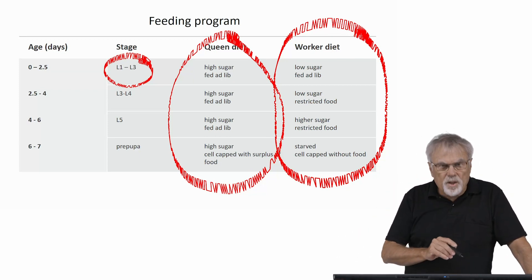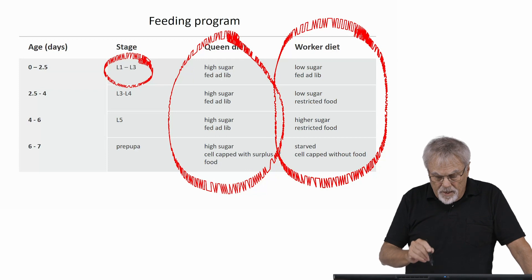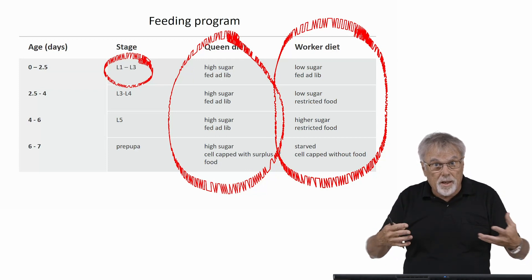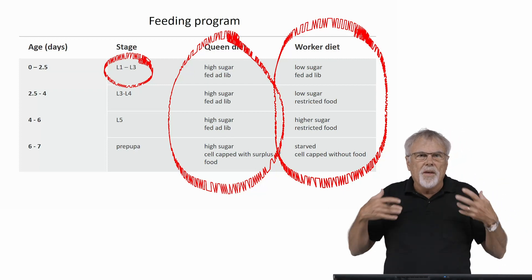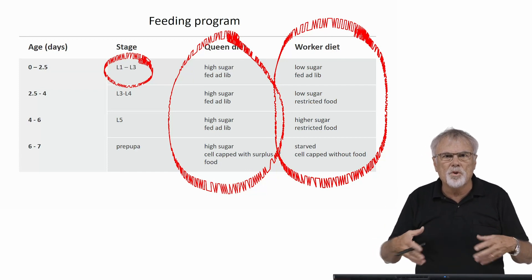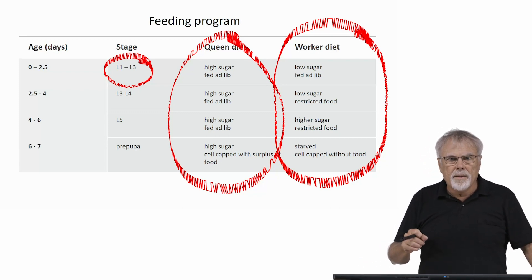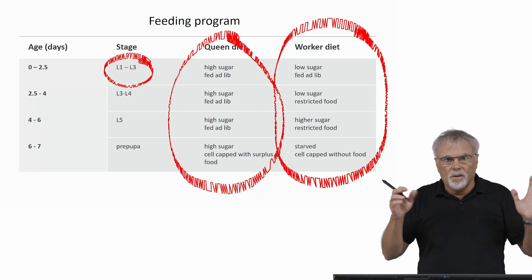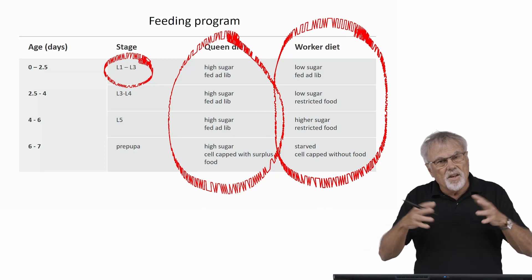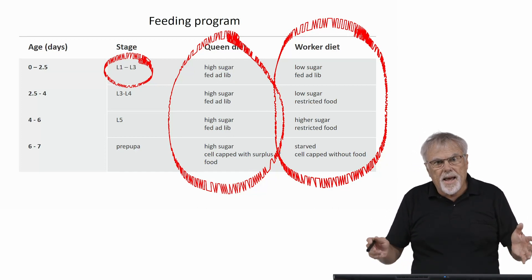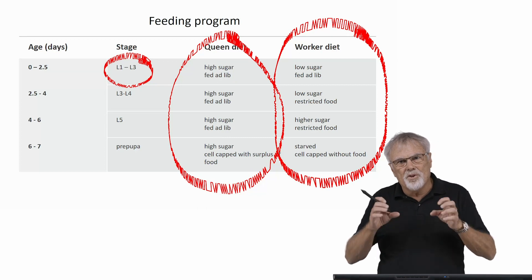In the first three larval instars, larvae destined to become queens are fed royal jelly ad lib with a high sugar concentration — meaning all they possibly want, in fact in surplus. Workers get fed basically the same diet; royal jelly is fed to both workers and queens. The difference is the sugar content: the worker diet has ad lib feeding but low sugar, so they receive less carbohydrate in their diet initially.